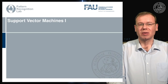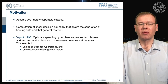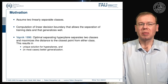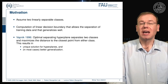Today: support vector machines. What is our motivation? We want to look into linear decision boundaries, and we assume that we have two linearly separable classes. We then want to compute a linear decision boundary that allows the separation of the training data and that generalizes very well.